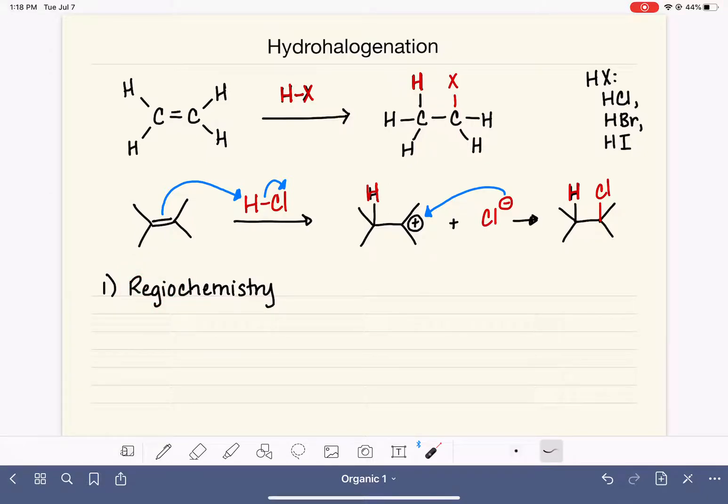In this particular case, regiochemistry is looking at which carbon of the carbon-carbon double bond gets the hydrogen and which gets the halogen.